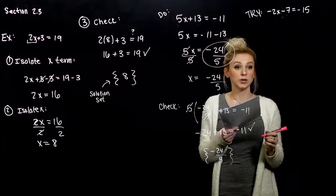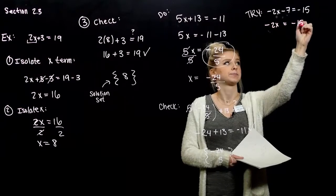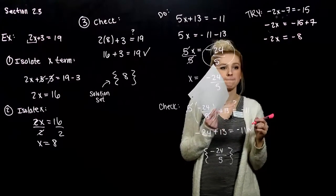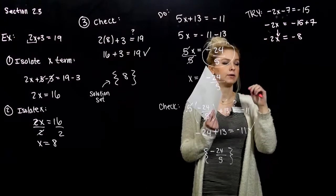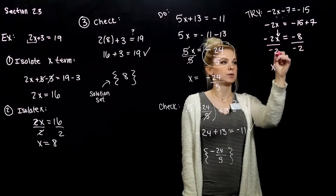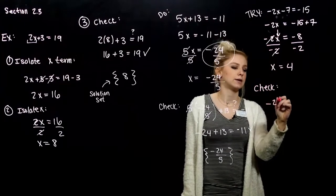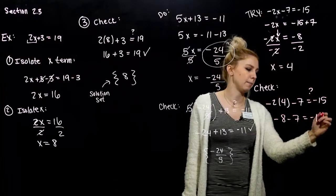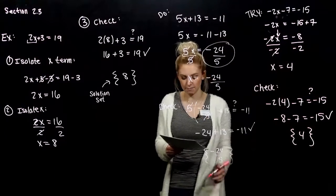Solve for x. What do you have to take care of first? We want the x term on its own, so we need to add 7 to both sides. When we do that, we're looking at minus 2x on the left and minus 8 on the right. Once that x term is isolated, we want x on its own — a coefficient of 1 out on the front — so we need to divide both sides by negative 2. Those cancel and x is equal to positive 4. We want to check: plug it back in. Does that really equal minus 15? I'm looking at minus 8 minus 7 — yes, that equals minus 15. So my solution set includes 4; it's the only thing I can plug into this equation and make it hold true.